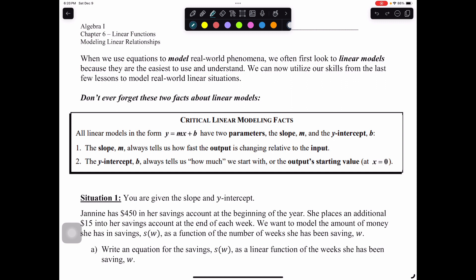We can now utilize our skills from the last few lessons to model real-world linear situations. Don't ever forget these two facts about our linear models: all linear models in the form y equals mx plus b have two parameters, the slope and the y-intercept. The slope always tells us how fast the output is changing relative to the input, and the y-intercept always tells us how much we're starting with, or the output starting value, which means that x equals zero.